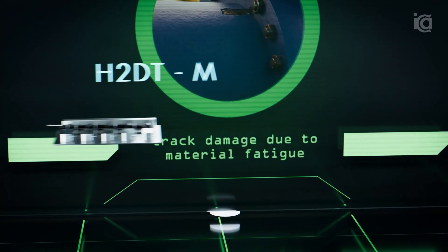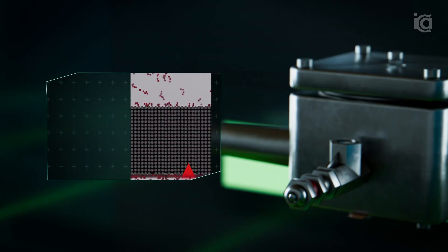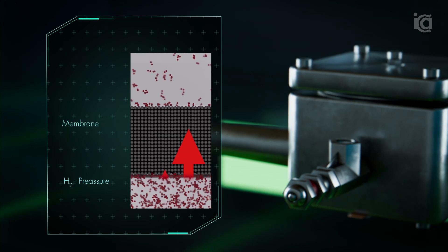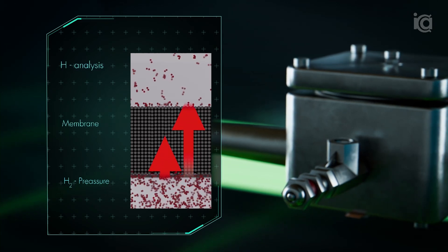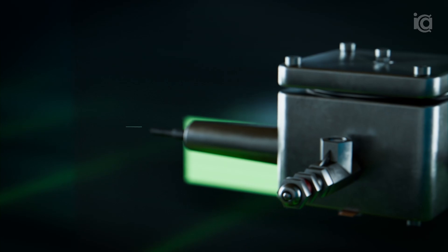Permeation measurements under pressure are carried out using a double-cell setup and the differential pressure method to measure hydrogen permeation through materials analyzing the barrier effect of coatings.